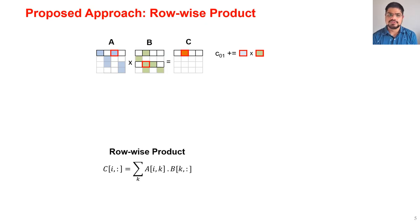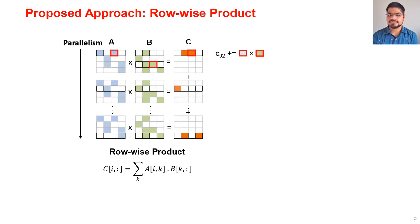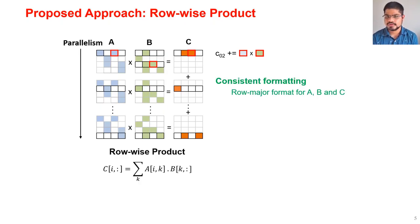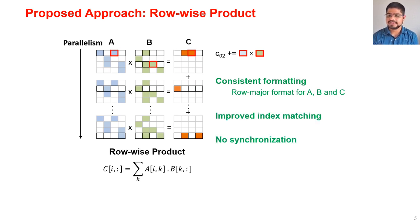Then we go to the second non-zero from A, read the non-zero entries from matrix B, and perform multiply-accumulates to produce the final results of output matrix C. The parallelism comes from the fact that different rows of the output matrix C can be produced in parallel. The major advantages of this approach are: consistent formatting — all matrices A, B, and C are stored in row-major order — improved index matching, no synchronization required, and medium to low on-chip memory requirements.